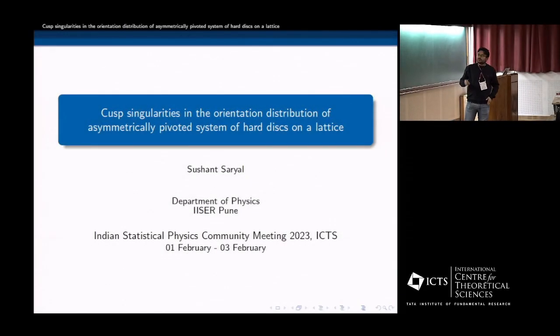So the topic of my talk is cusp singularities in the orientation distribution of asymmetrically pivoted system of hard disk on a lattice. Okay, so let us start.